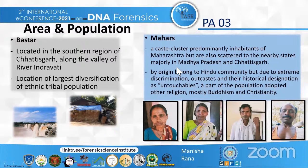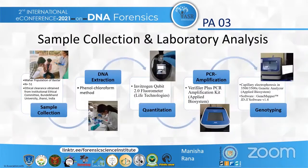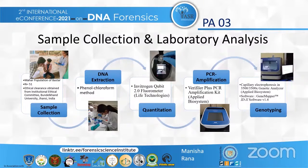The Mahar caste are native inhabitants of Maharashtra who, due to discrimination and outcast status, have migrated to various pockets of adjoining states, particularly Madhya Pradesh and Chhattisgarh, and have adopted other religions such as Buddhism and Christianity apart from Hinduism. For this study, blood samples from 51 healthy unrelated individuals of Mahar caste belonging to the Bastar region were collected along with ethnographic data and written consent. Ethical approval was obtained from the Institutional Ethical Committee, Bundelkhand University, Jhansi.